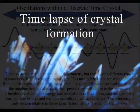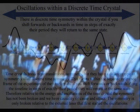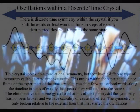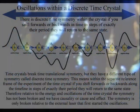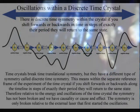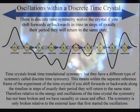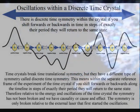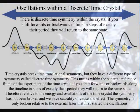Time crystals do break time translational symmetry, but they have a different type of symmetry, called discrete time symmetry. This means within the separate reference frame of the experiment of the time crystal, if you shift forward or backwards in time, in steps of exactly their period, they will return to the same state. Therefore, relative to the energy and oscillations of the time crystal, the symmetry has not been broken. The symmetry is only broken relative to the external laser that first started the oscillation.